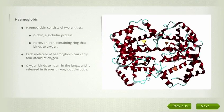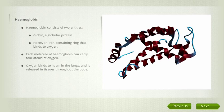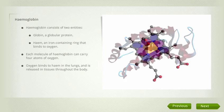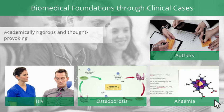Hemoglobin consists of two major entities. One, the globular protein known as globin. Two, the heme structure which contains iron, the actual atom which binds to oxygen.